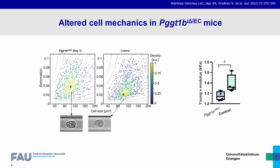To identify alterations of cell mechanics, we analyzed freshly isolated IECs via real-time fluorescence deformability cytometry. Upon PGGT1-beta deletion, GGTase-deficient IECs are characterized by a decreased Young's modulus, indicative of increased deformability.